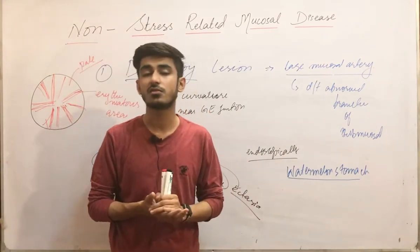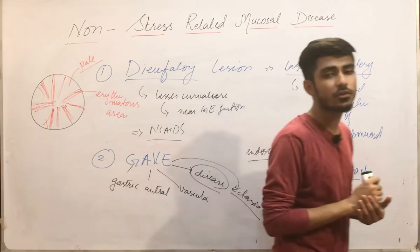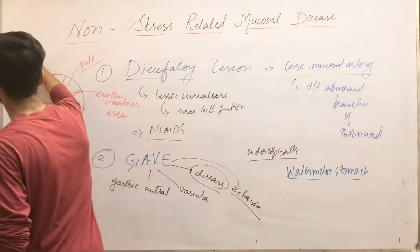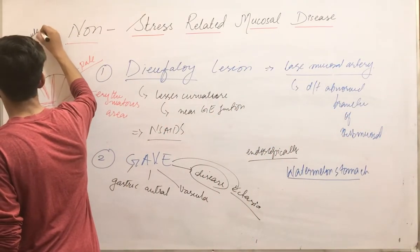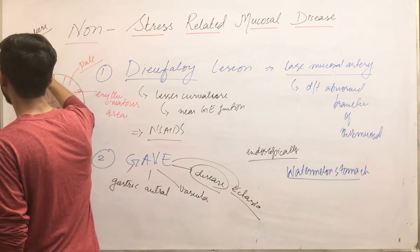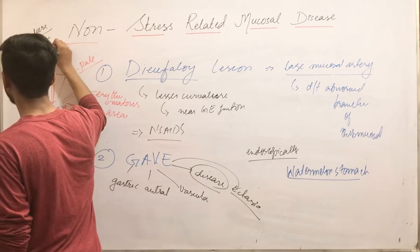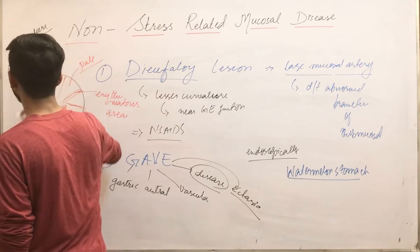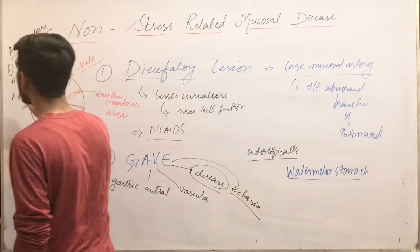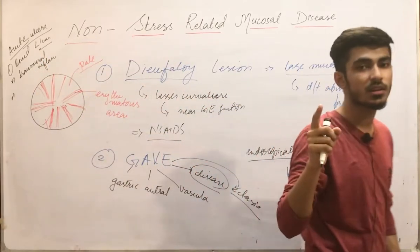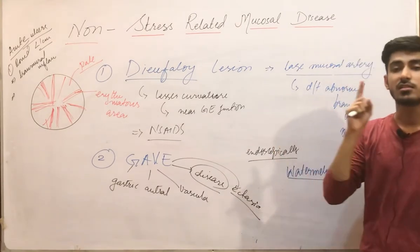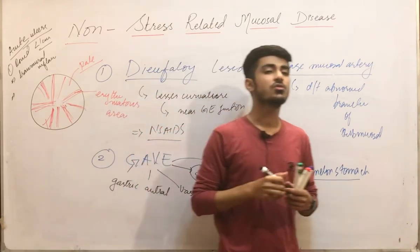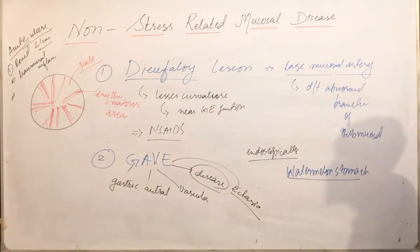Finally, the morphological features of acute ulcers: acute ulcers are round and less than one centimeter in diameter. They may show transmural inflammation. Remember that there will be no vascular thickening and no scarring in acute ulcers — scarring and vascular thickening occur in chronic ulcers, not acute ulcers.